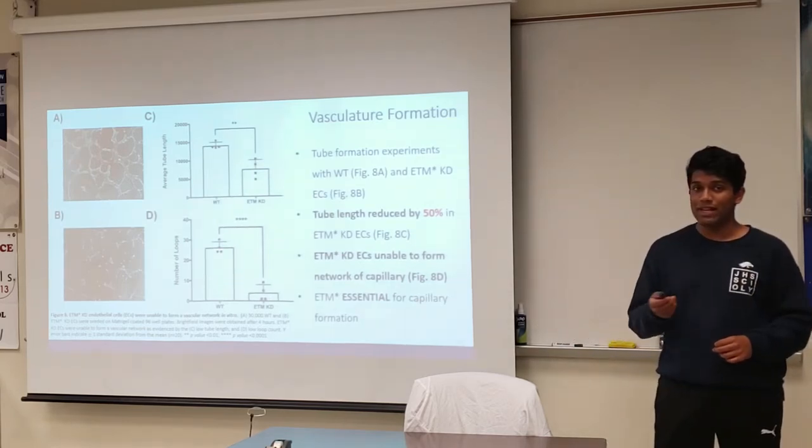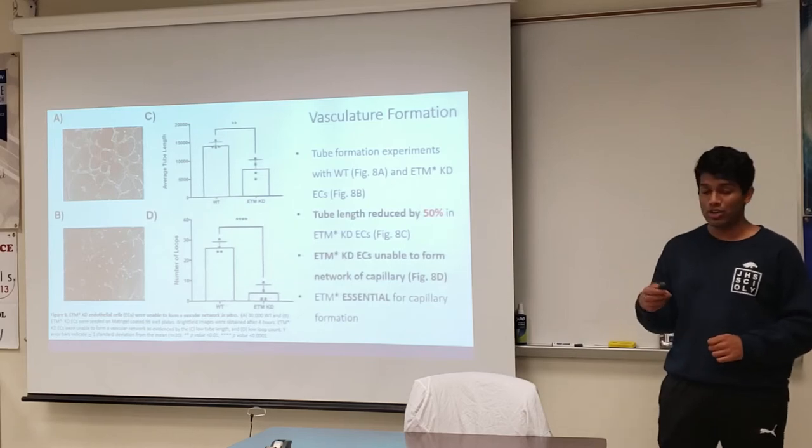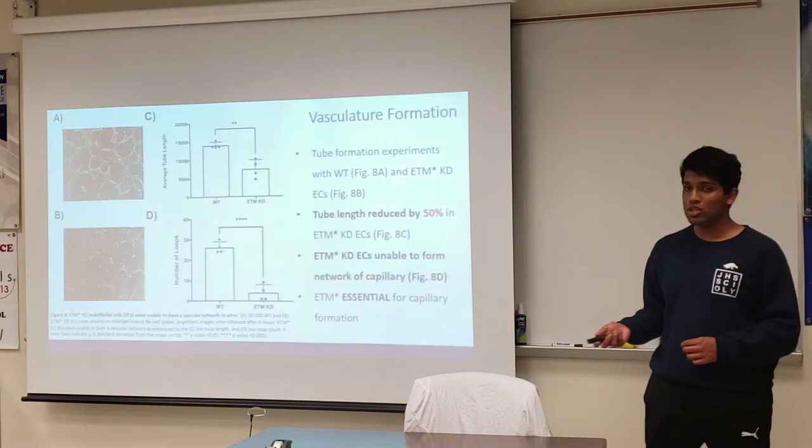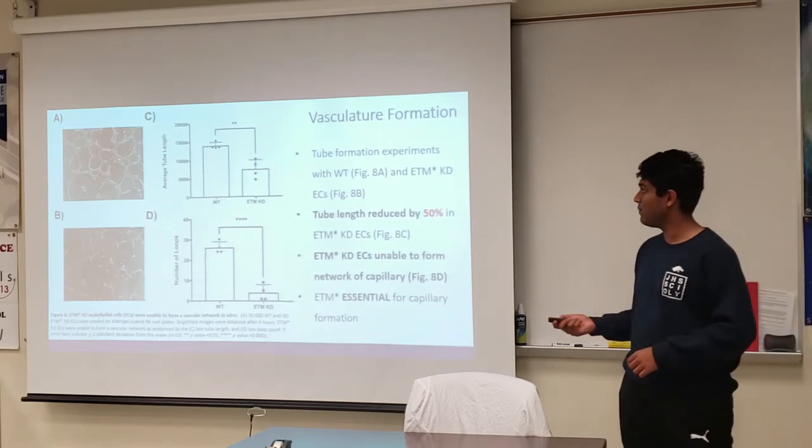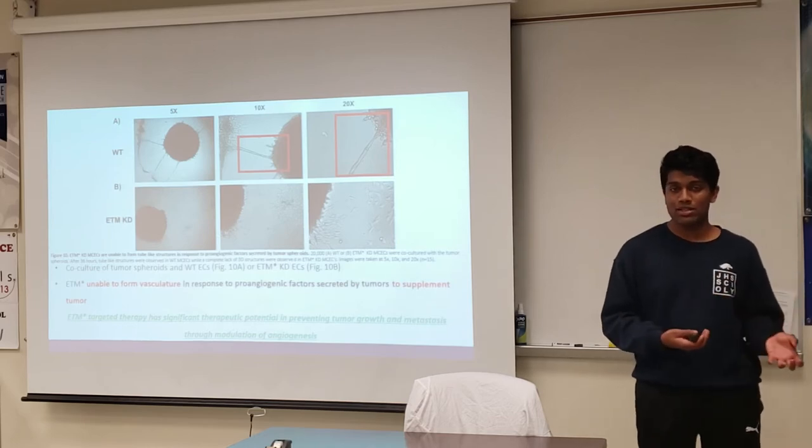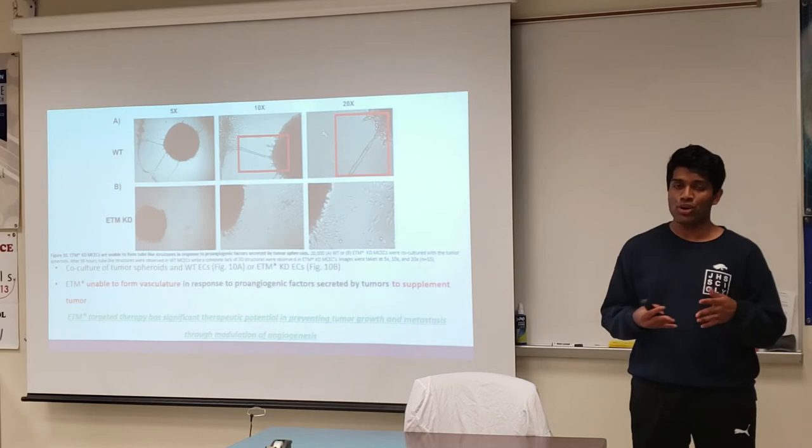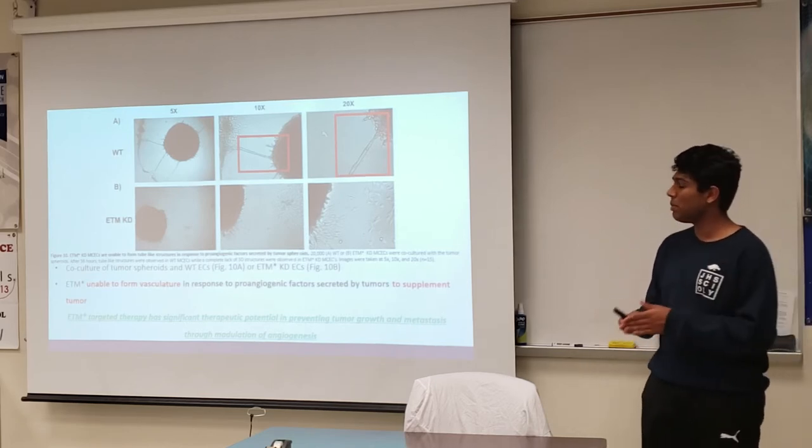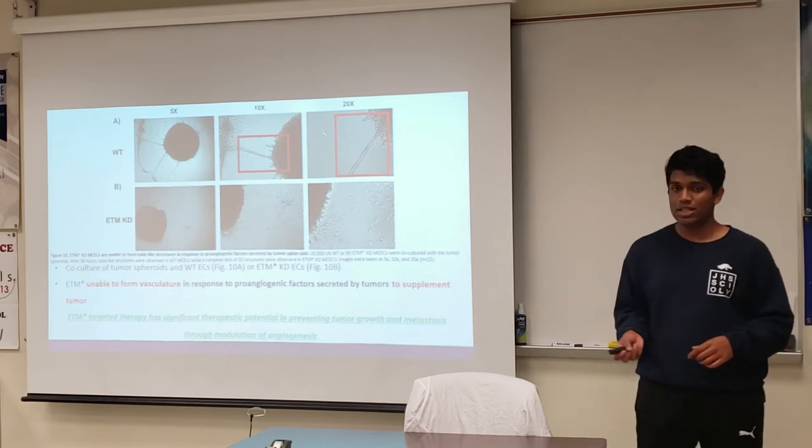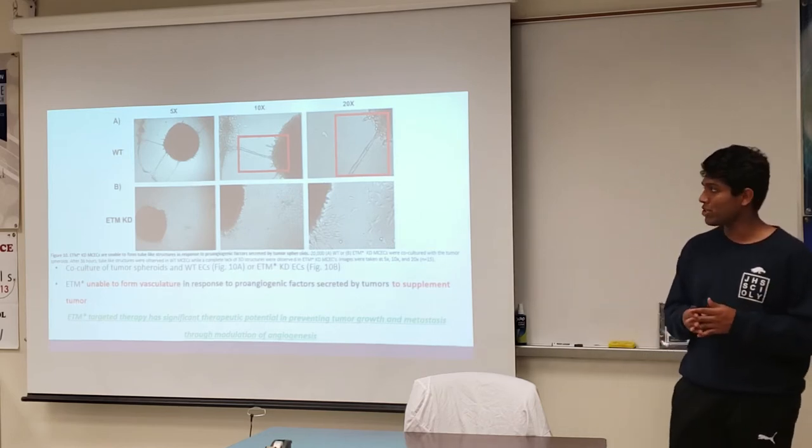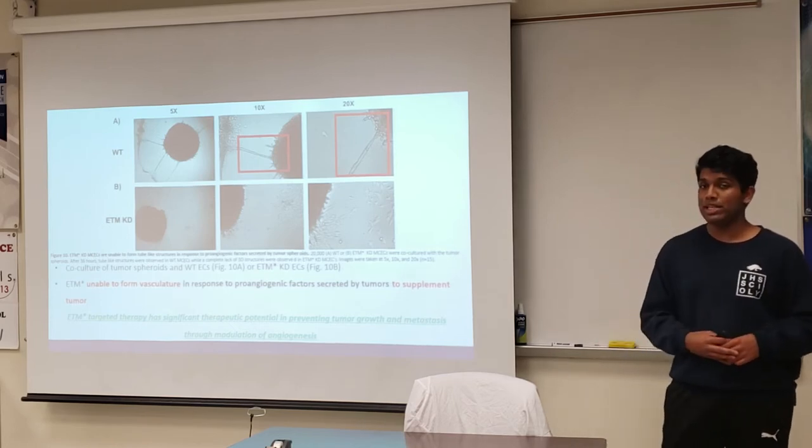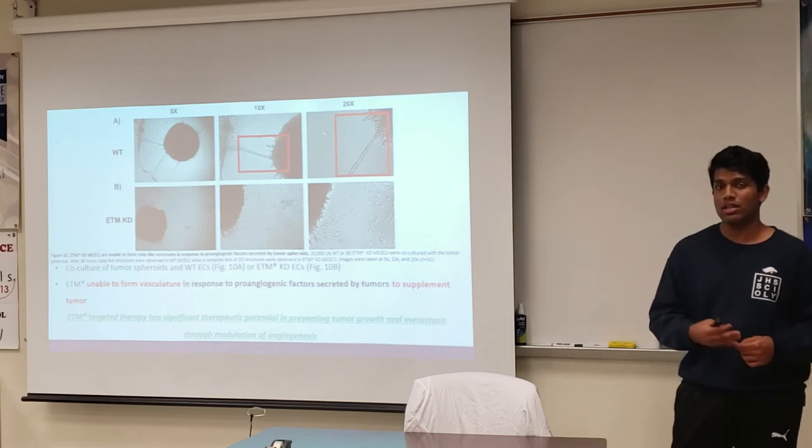Now, to identify if ETM may be a potential target during tumor angiogenesis, I developed a novel in vitro tumor angiogenesis assay to bypass in vivo study. To do this, I co-cultured tumor spheroids and single-cell endothelial cells and allowed the endothelial cells to organize into tubular structures to supplement the solid tumor spheroid. I noticed that in the wild-type condition, endothelial cells were able to organize into tubular structures towards the solid tumor spheroid, whereas upon the depletion of ETM, we see a complete lack of tube formation or endothelial cell organization.